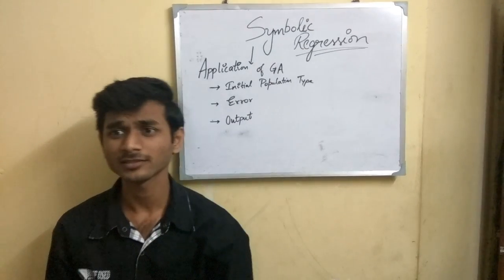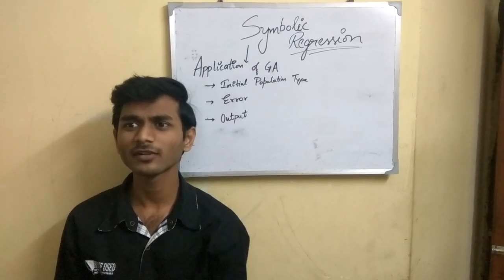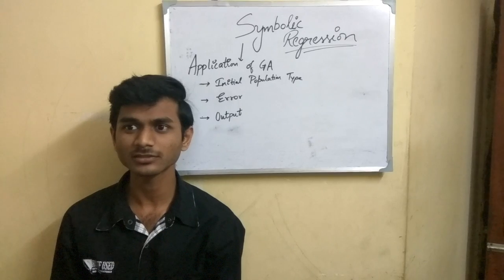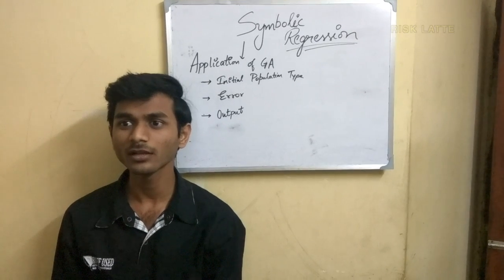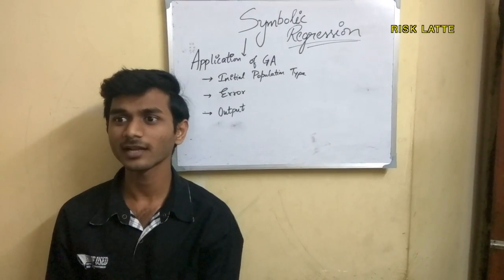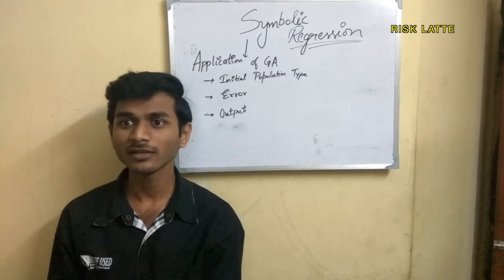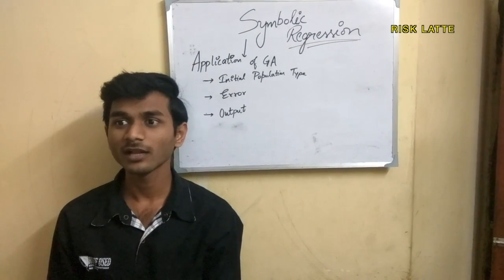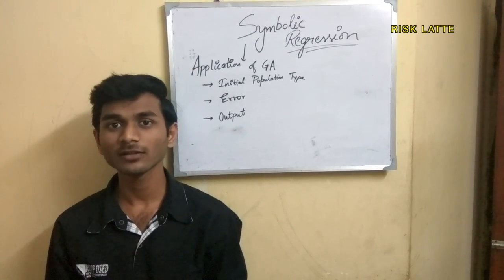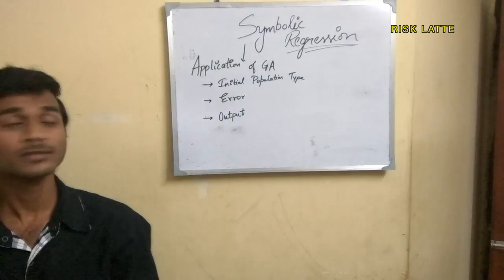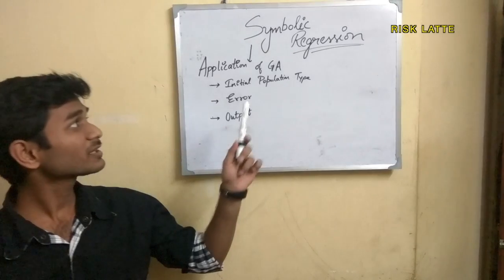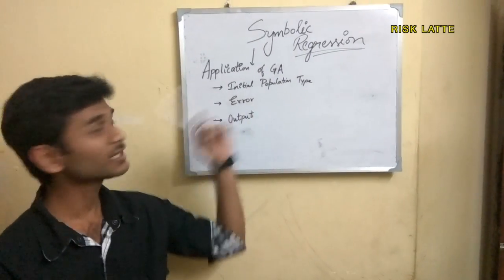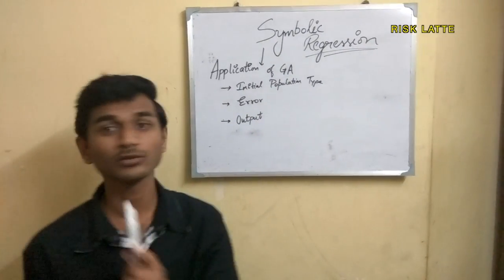What is symbolic regression? Symbolic regression is a type of regression analysis that searches the space of mathematical expressions to find the model that best fits the given dataset in terms of accuracy and simplicity. No particular model is provided as a starting point of the algorithm. Basically, symbolic regression uses evolutionary algorithms such as genetic algorithms to find the solution.